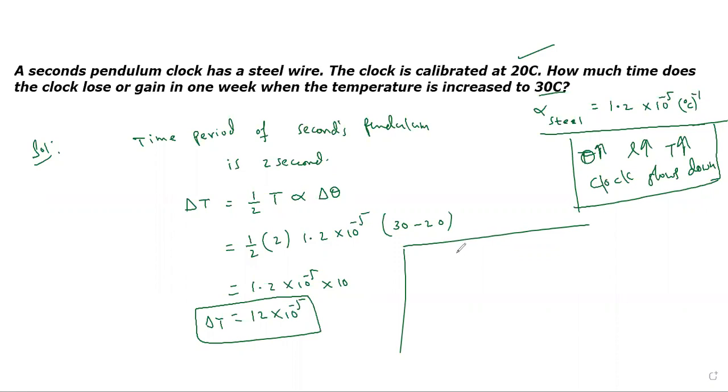Okay, now the new time period T dash equals original time period plus delta T, which is equal to 2 plus 12 times 10 to the power minus 5.